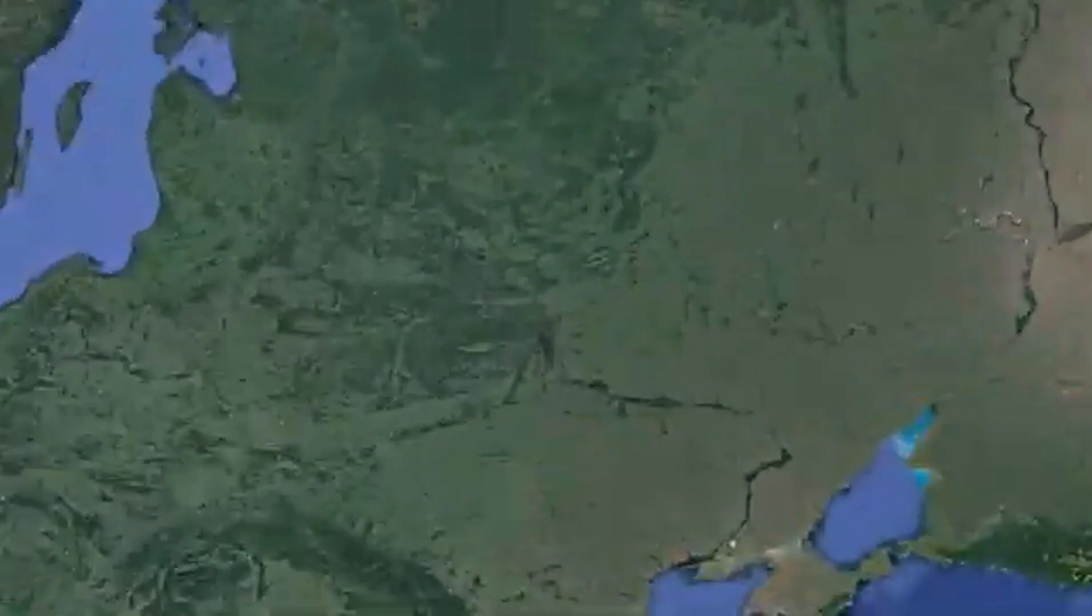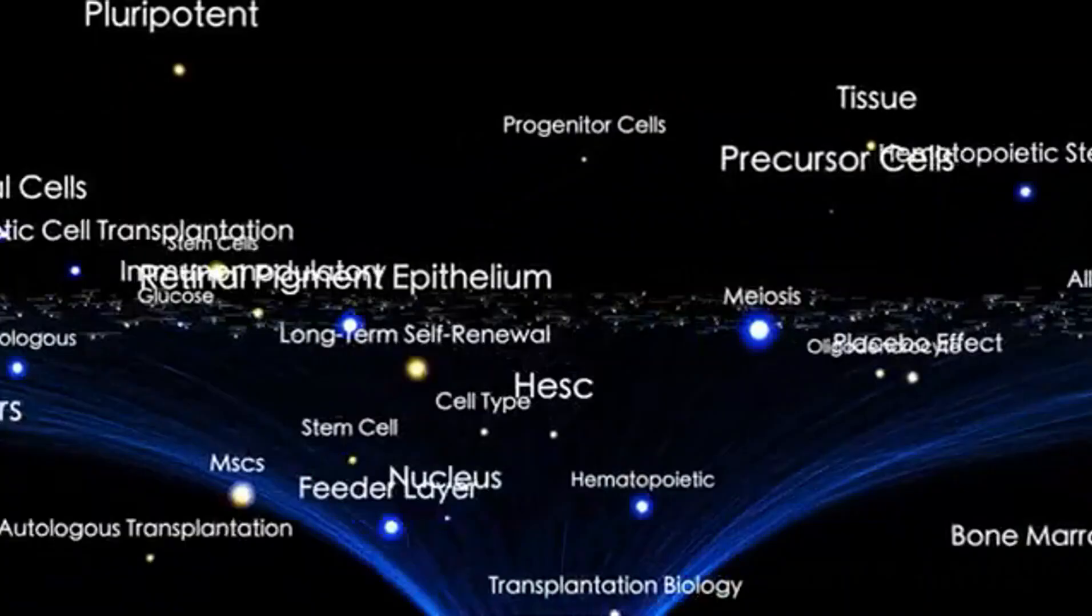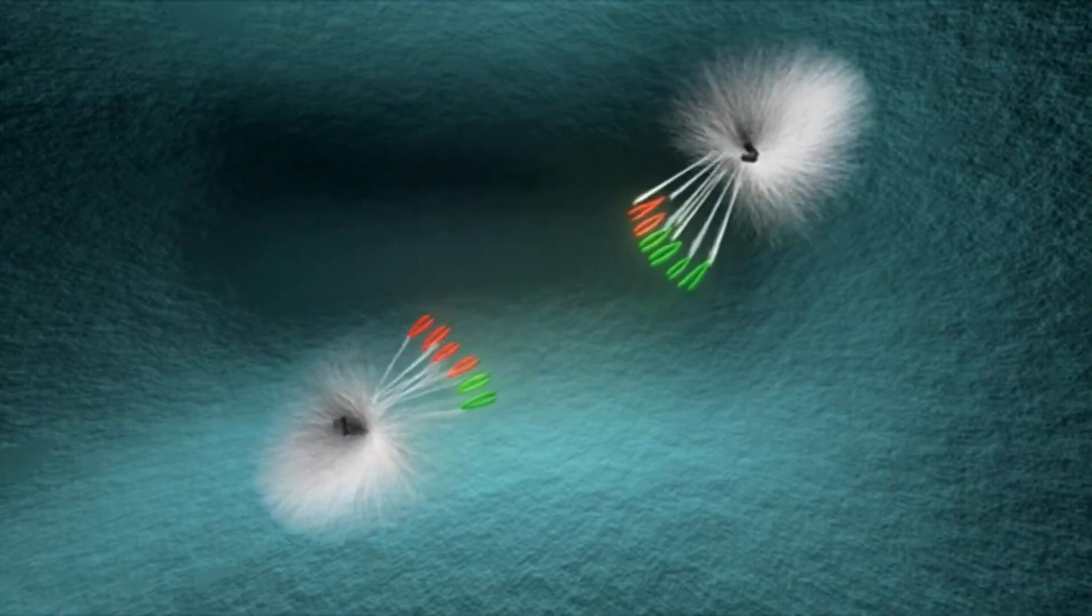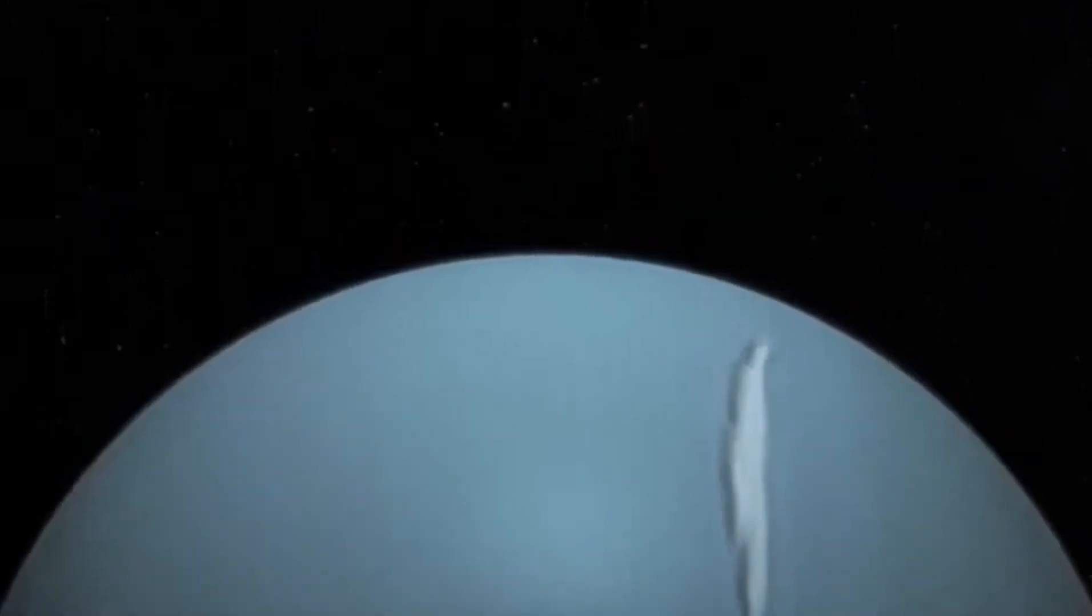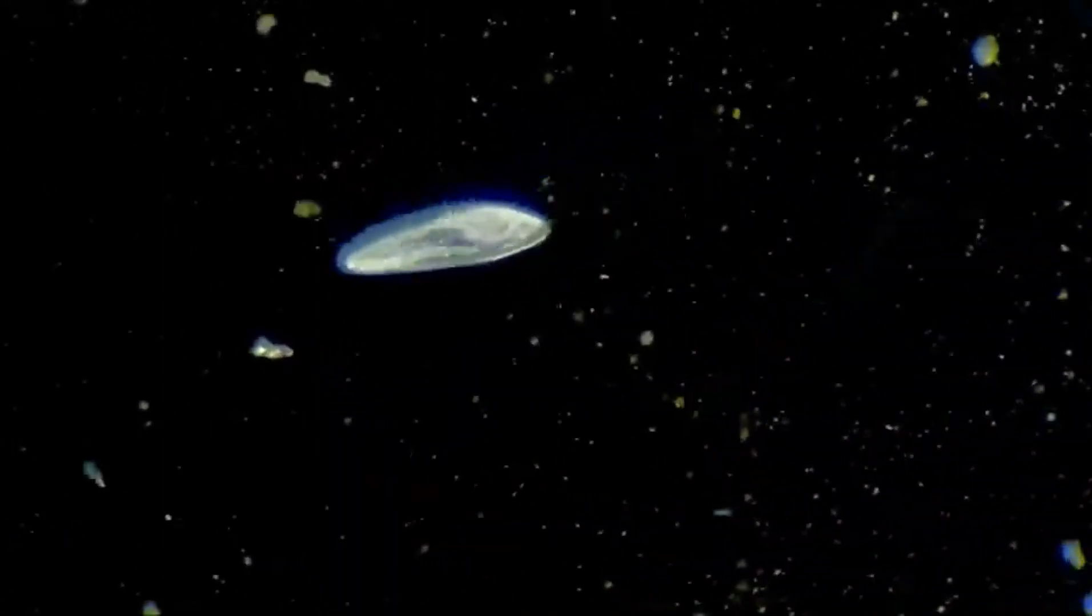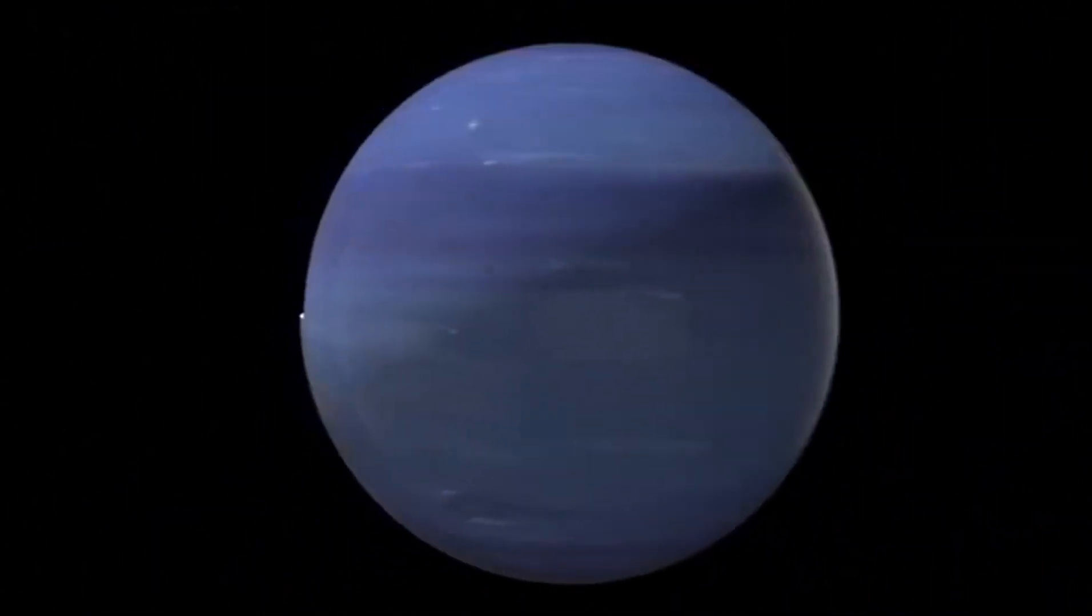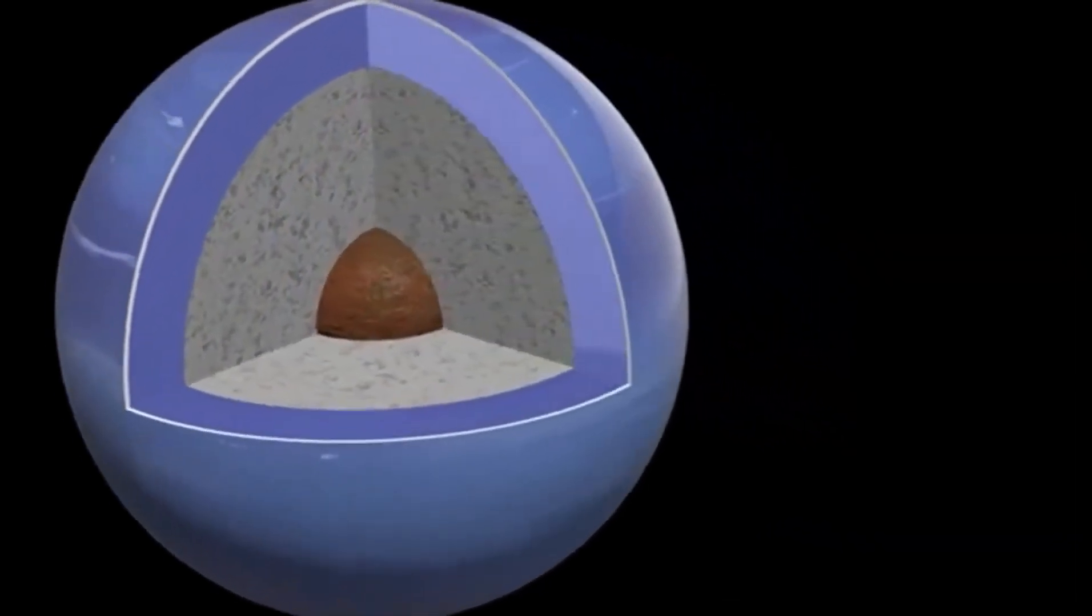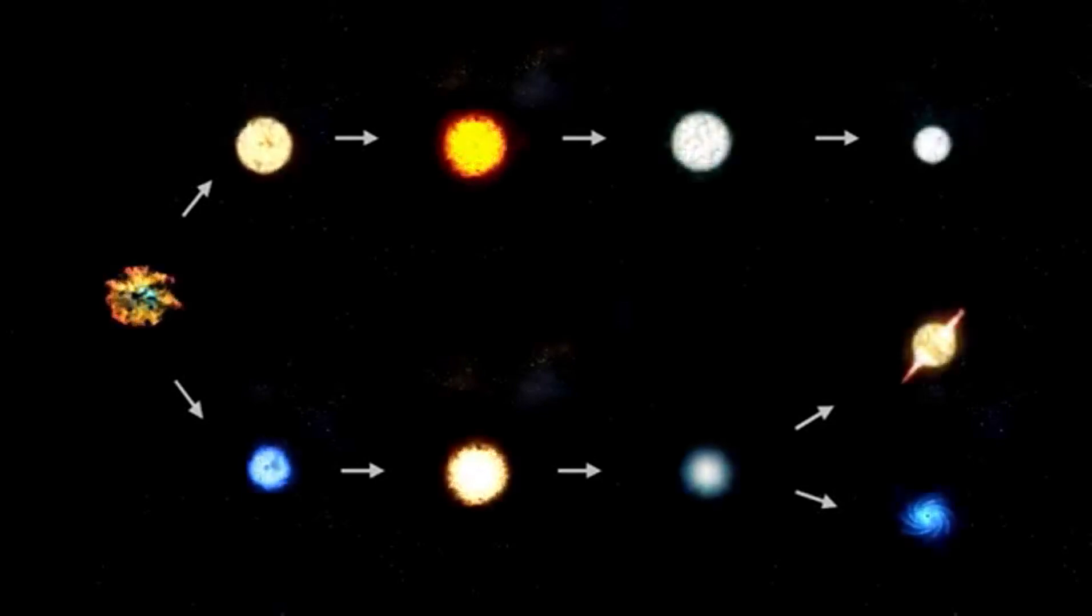Our solar system offers us examples of both rocky worlds and gas giants—worlds with solid surfaces like Earth and Mars, and enormous spheres of gas like Jupiter and Saturn. But K2-18b does not comfortably fit into either group. Its size and mass suggest that it may be enveloped in a thick atmosphere, possibly composed of hydrogen and helium, while beneath that gaseous shroud could lie a vast ocean, perhaps covering the entire planet.